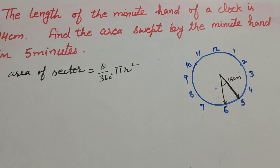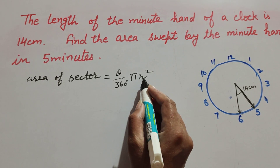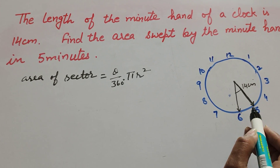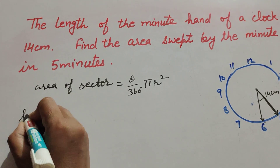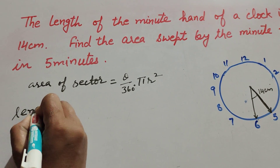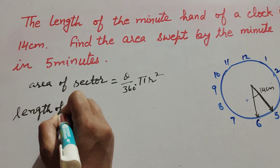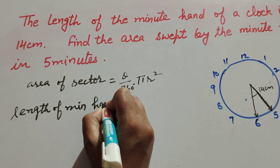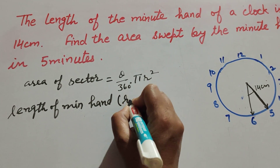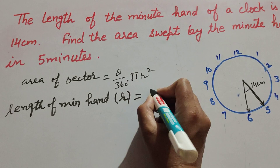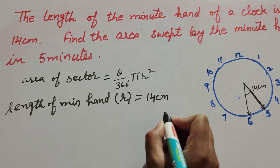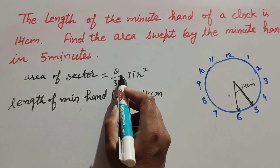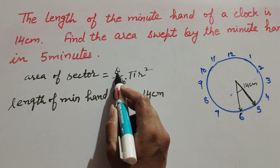The area of a sector of a circle is equal to theta over 360 degrees, multiplied by pi r squared. Here, r is the radius, and the radius is equal to the length of the minute hand.